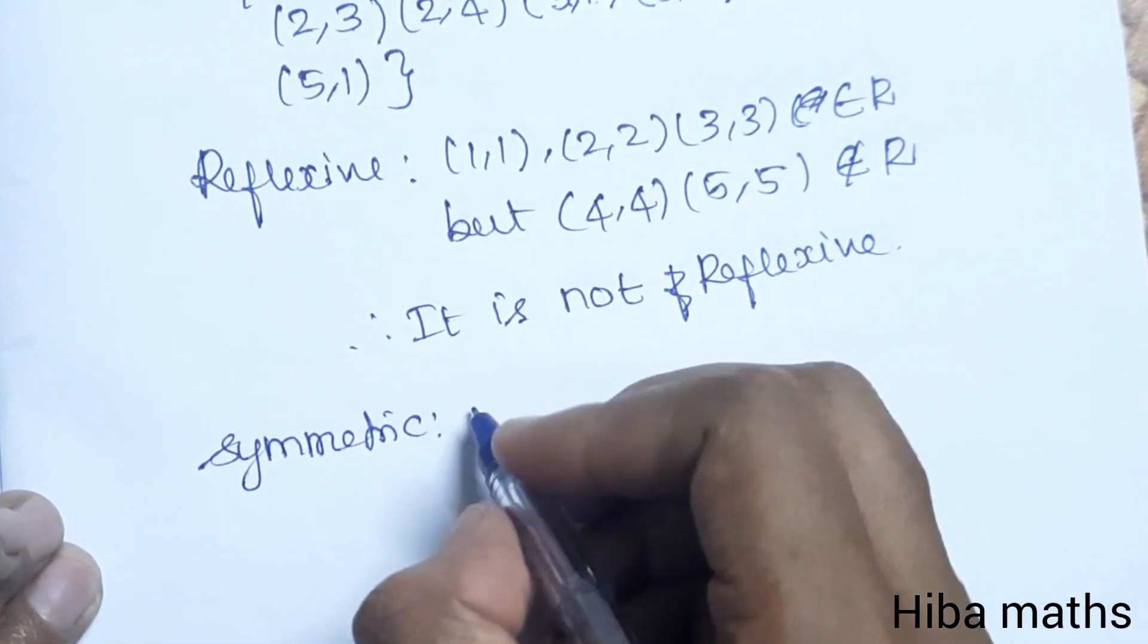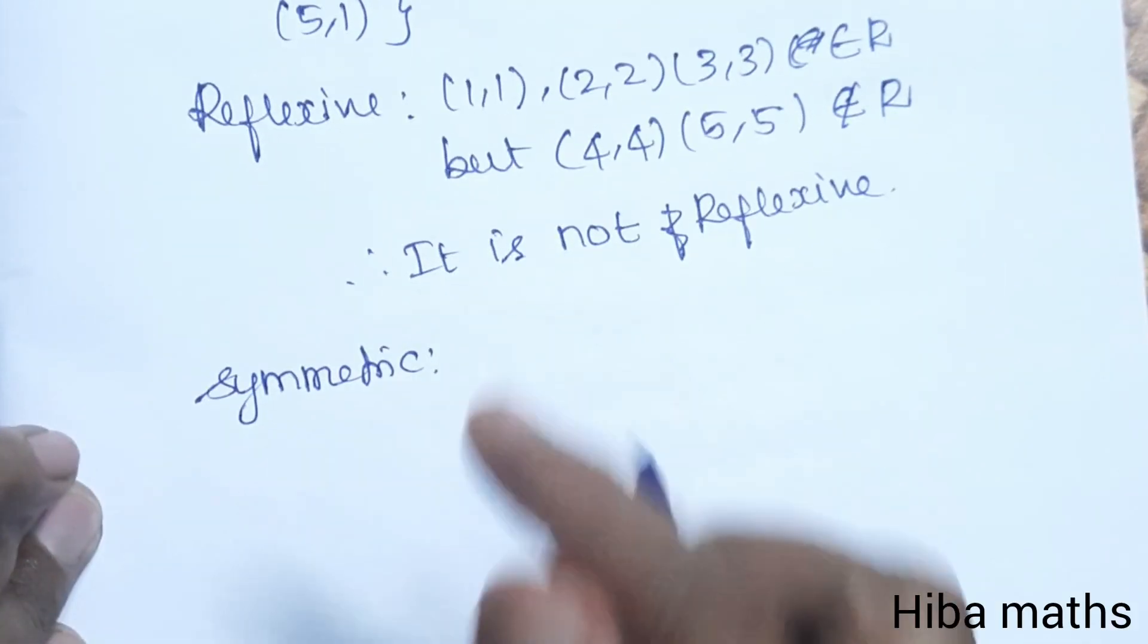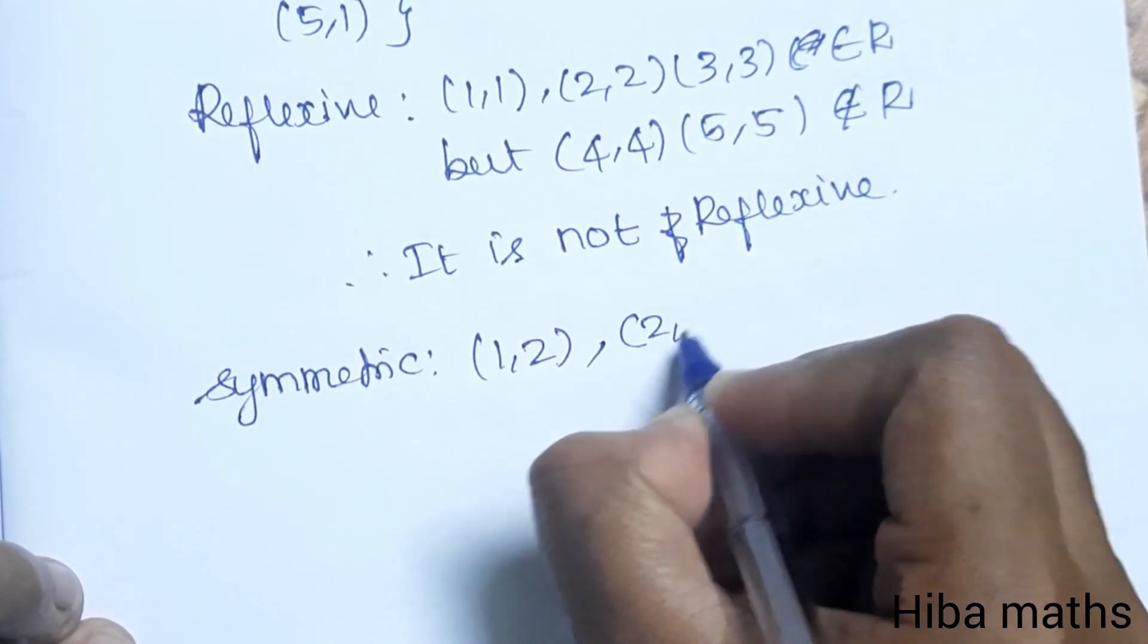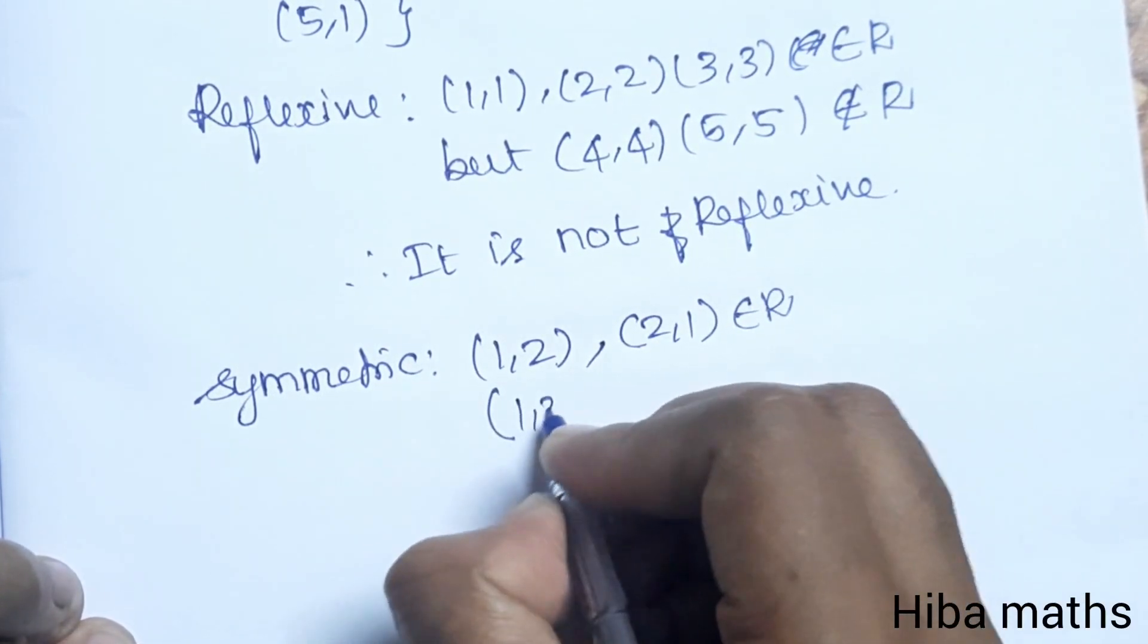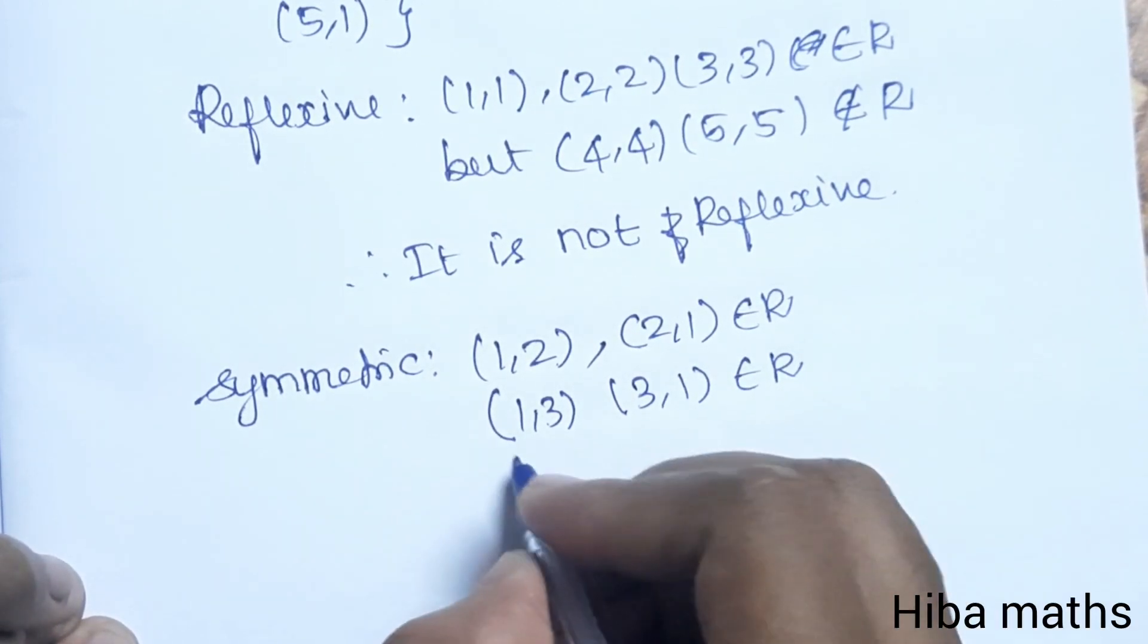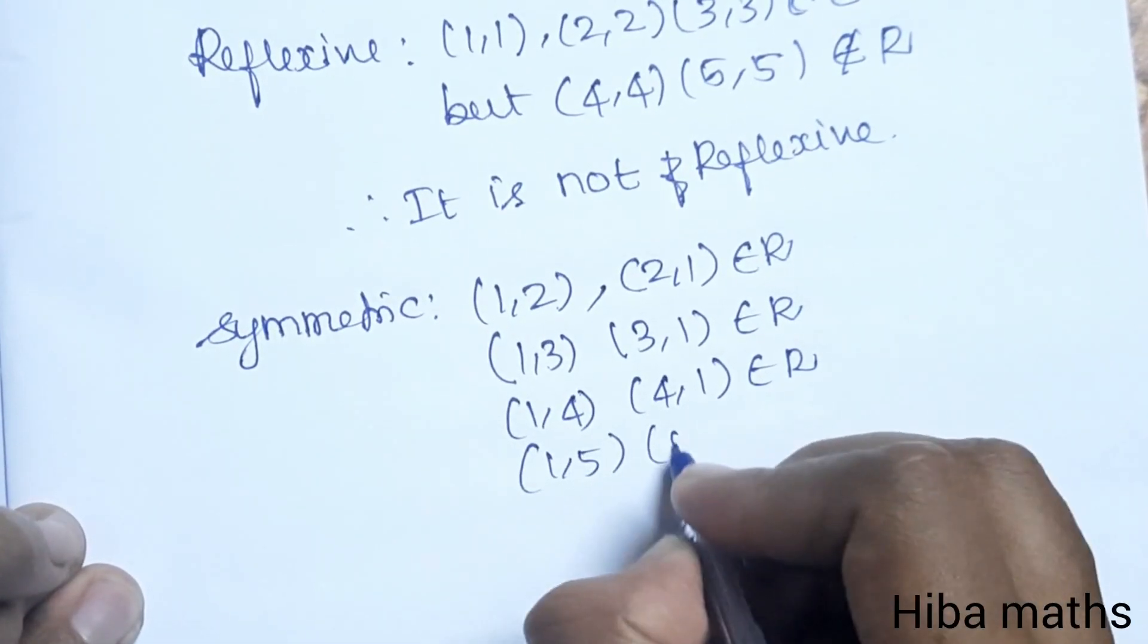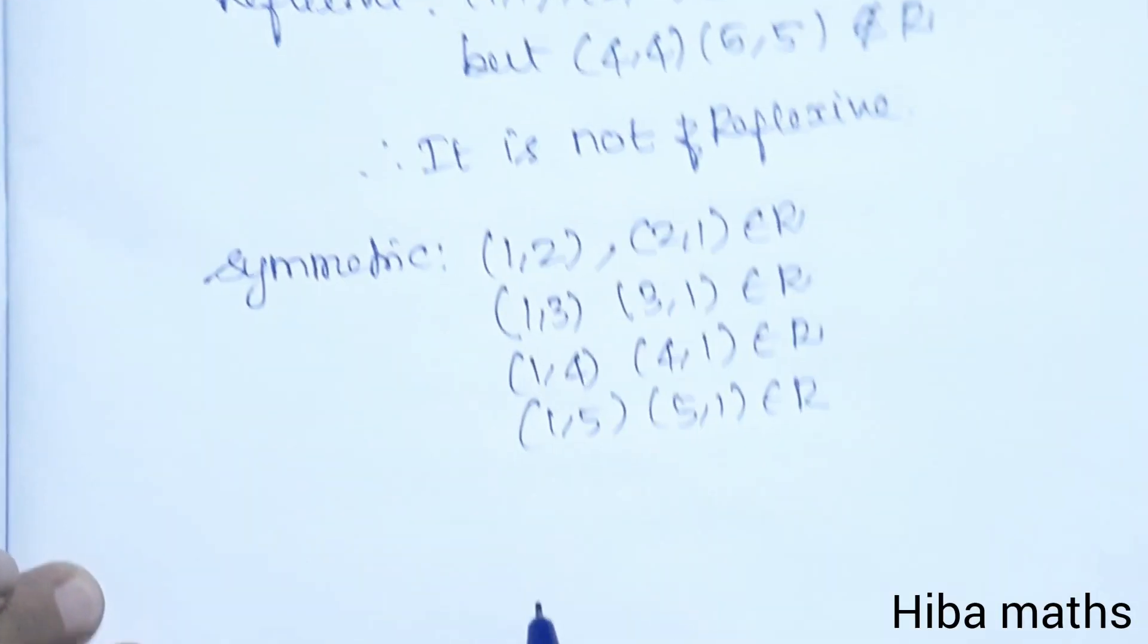(1,2) and (2,1) are both elements of R. (1,3) and (3,1) are elements of R. (1,4) and (4,1) are elements of R. (1,5) and (5,1) are elements of R. The condition is satisfied, therefore R is symmetric.